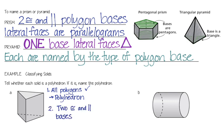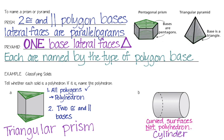We cannot call those lateral faces, they must be the bases, because those are not parallelograms. All of the lateral faces are parallelograms, so this is a prism. The bases are triangles, so it is a triangular prism. In this one over here, we've got curved surfaces, so it's not a polyhedron, it is called a cylinder.